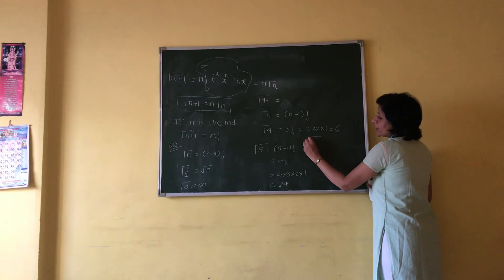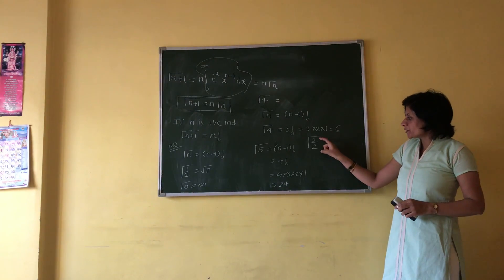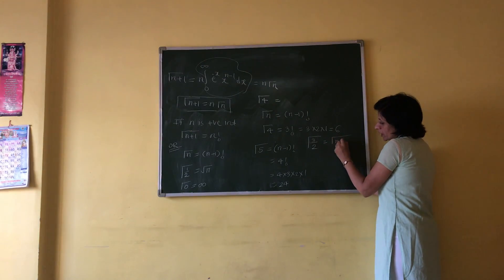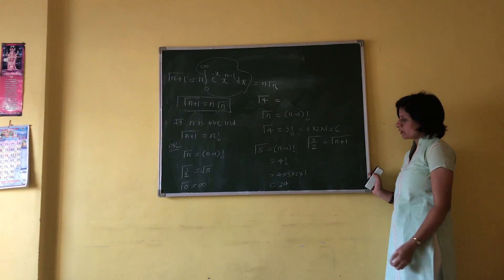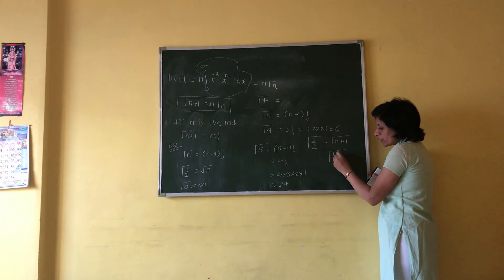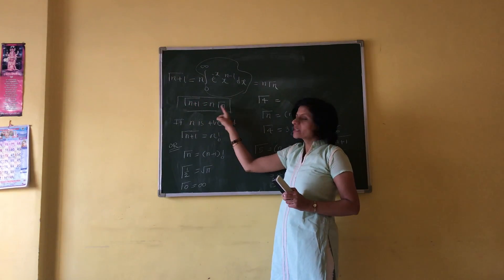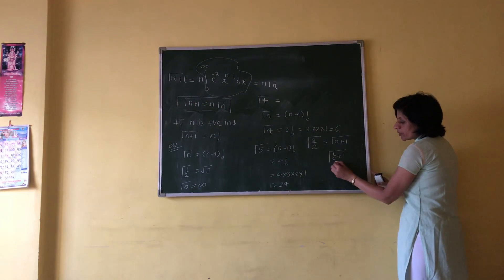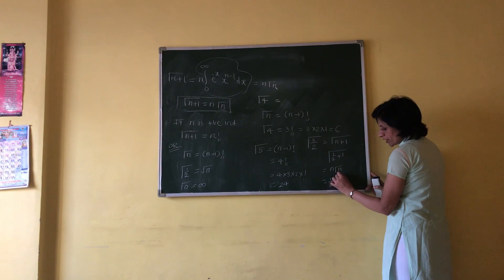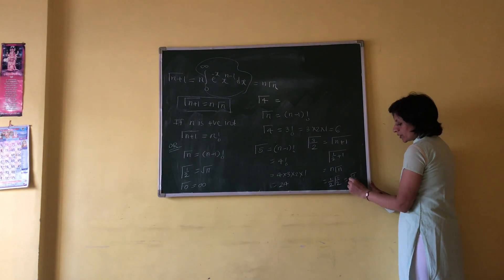Similarly, we will find gamma of 3 by 2. Here, 3 by 2 is positive but in fraction form. First, write 3 by 2 in gamma of n plus 1 form. That is gamma of 1 by 2 plus 1. We know the reduction result for gamma function: gamma of n plus 1 equals n gamma n. Here, n is 1 by 2, so this equals 1 by 2 times gamma 1 by 2. But gamma 1 by 2 is root pi.